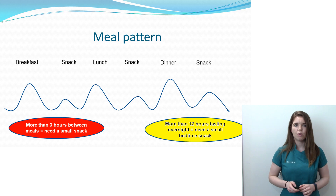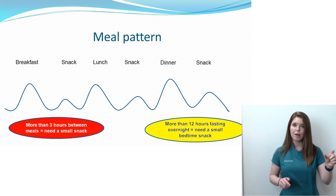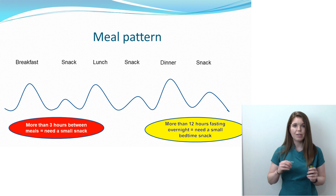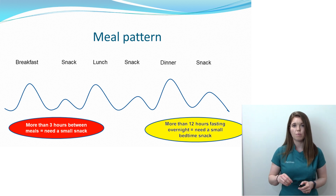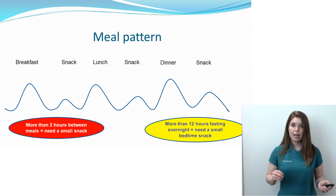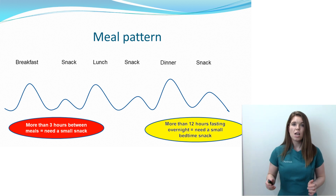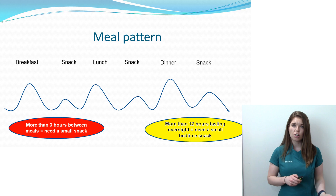Another very important factor with gestational diabetes is the meal pattern. We recommend sticking to three meals and three snacks every day, as this allows your blood sugars to stabilize more easily. Try not to go any longer than three to four hours between meals or snacks. Similarly overnight, try to avoid leaving more than about 10 to 12 hours fasting. To help with this, we recommend having a bedtime snack directly before you go to bed. You can see examples of snacks on pages 13 or 14 of your booklet.